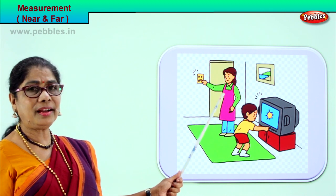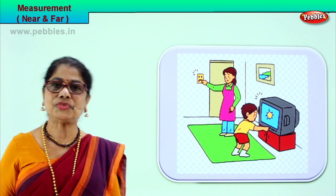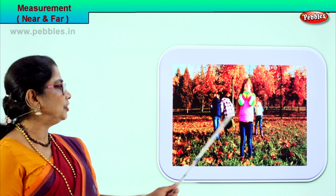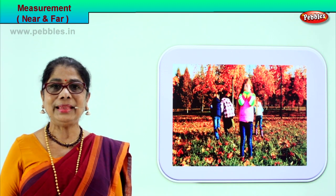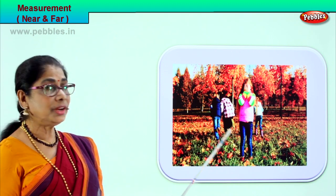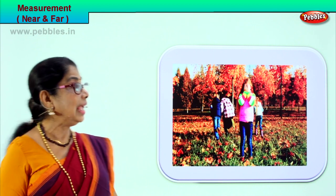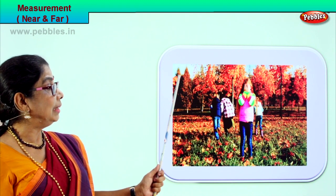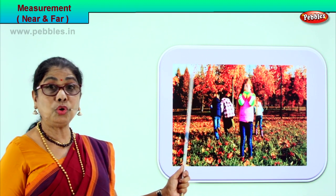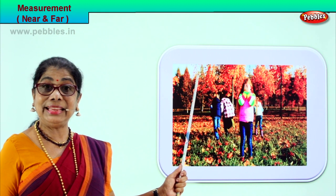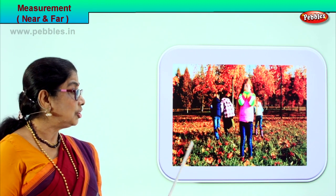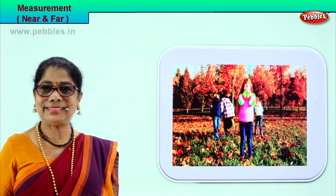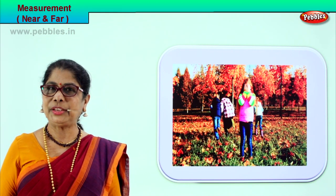Let's take another picture and understand what is near and far. Here children are playing in a garden, trying to play hide and seek. Can you see the trees far away? Look at them — so many lovely trees far away. The trees are far and the children are here, near. Good!